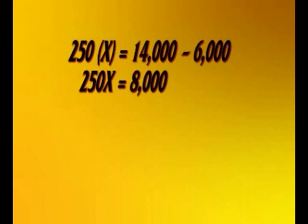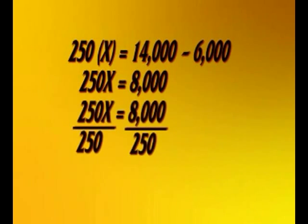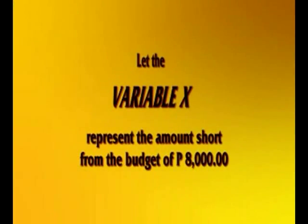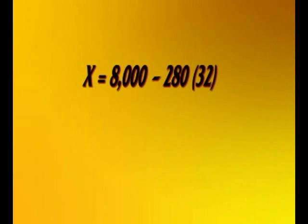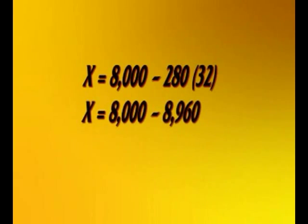We have 8,000 pesos equivalent to 250 times X. Divide both sides by 250. Thus, X is equal to 32 days. I will make 32 lists for everyday budget. But what if the amount we spend exceeds 250 pesos? Let's say 280 pesos per day. Given the budget of 8,000 pesos for 32 days and the actual daily expenses of 280 pesos, how much more money will be needed? Using a variable in a mathematical expression, let X represent the amount short from the budget of 8,000 pesos. First, find the total amount spent for 32 days at 280 pesos daily expense. So, we multiply 280 by 32. Then, X is equal to 8,000 minus 8,960. Thus, X is equal to negative 960. The budget will be short by 960 pesos. This is indicated by the negative sign.